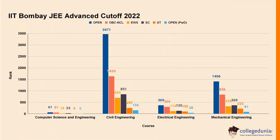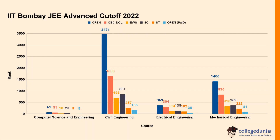For IIT Bombay JEE Advanced cut-off 2022, Computer Science and Engineering: Open category 61, OBC-NCL 51, EWS 18, SC 23. For Civil Engineering: Open category 3471, OBC-NCL 1633, EWS 693, SC 851.